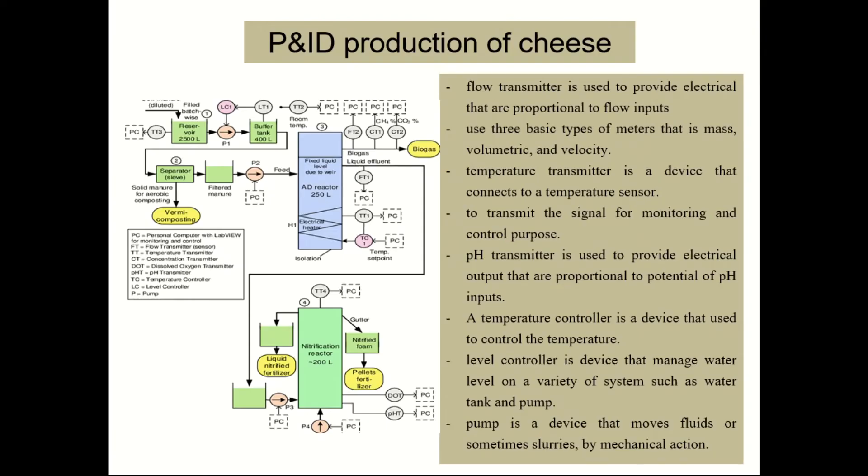Next, I will talk about the P&ID for production of cheese. In this P&ID, a flow transmitter is used to provide an electrical signal proportional to flow inputs. They use flow meters to measure the flow of liquid and gas. Flow transmitters use three basic types of meters which are mass, volumetric and velocity.